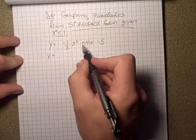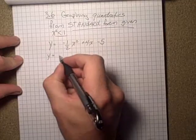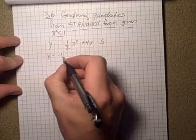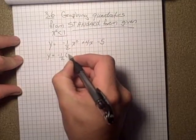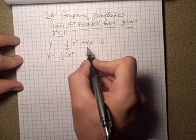And we want to do that with the two terms that have x's in them, x squared and x. So take a negative a half out, so that leaves me with x squared.